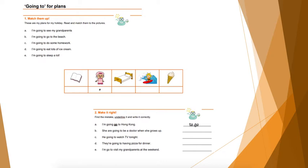We also have this exercise about 'going to' for plans. For example, number one says 'Match them up — these are my plans for my holiday' — we need to match the pictures. For instance: 'I'm going to see my parents.' We need to match those sentences with the correct pictures.